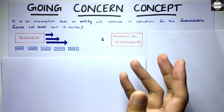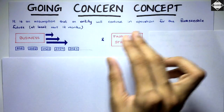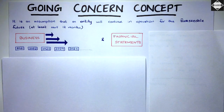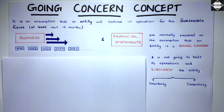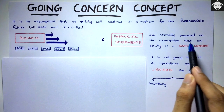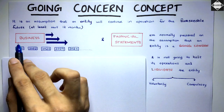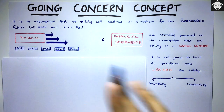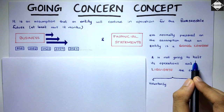That's the basic going concern assumption — or concept — of accounting. Financial statements are normally prepared on a going concern basis, meaning they are prepared on the assumption that the entity is a going concern, i.e., the entity will continue its operations for the foreseeable future.